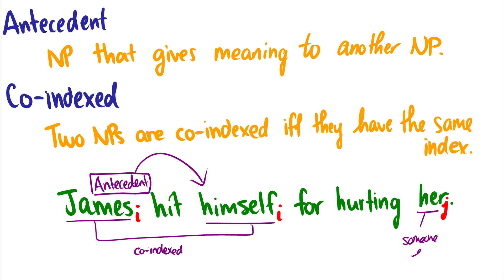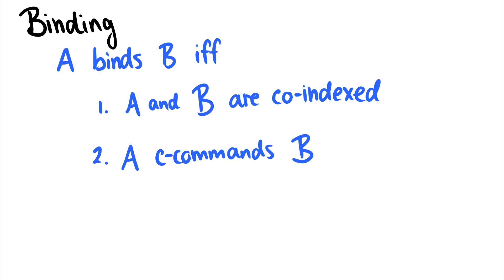So those are some more terms. Finally, this is binding theory, so we should mention what binding means. A binds B if A and B are co-indexed and A C-commands B. So you might have forgotten what C-command is. These are two important conditions: first, A and B have to be co-indexed; and second, A C-commands B.